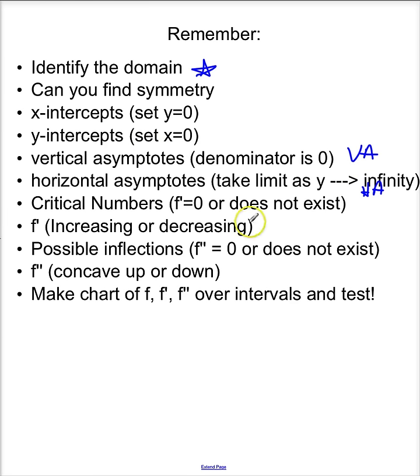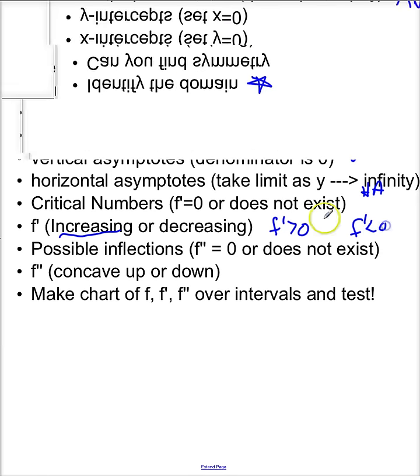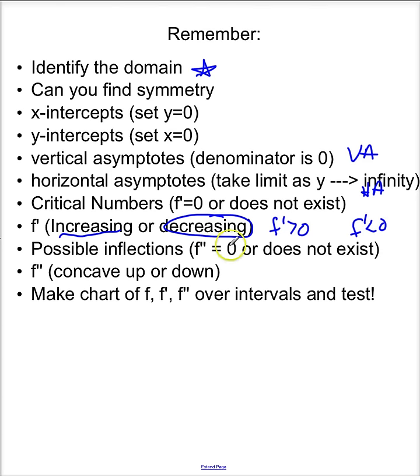Where is f prime increasing? Where is f prime decreasing? Remember, this is where f prime is greater than zero for increasing, and f prime is less than zero and it's decreasing. Possible inflection is when the second derivative is zero or doesn't exist. Concavity. And then make a chart of f, f prime, and f double prime over your entire interval and test everything.